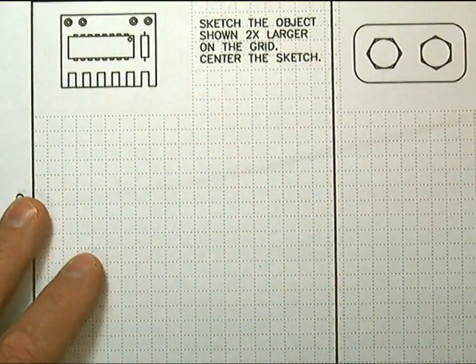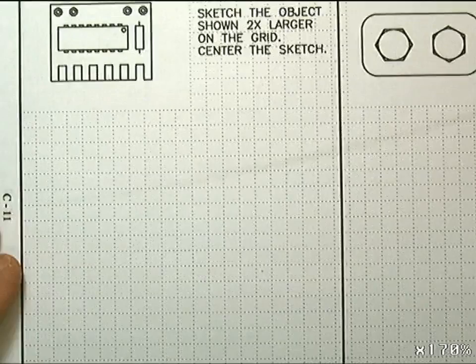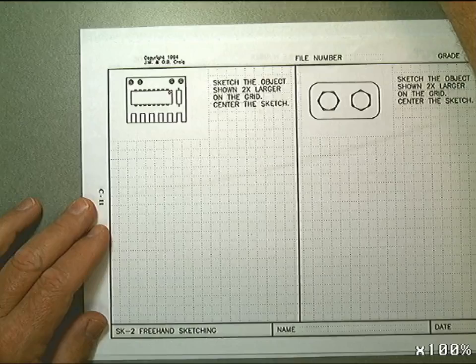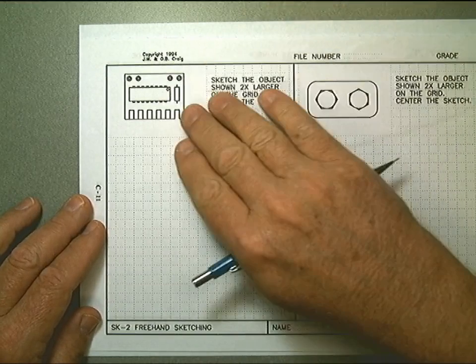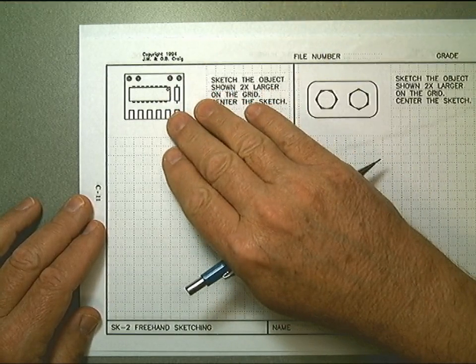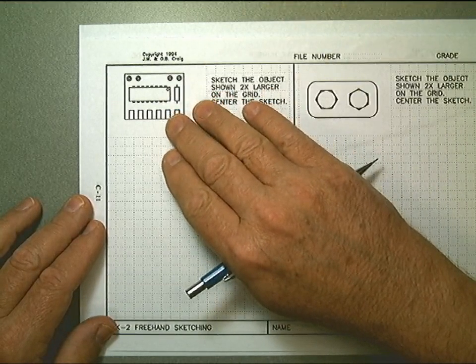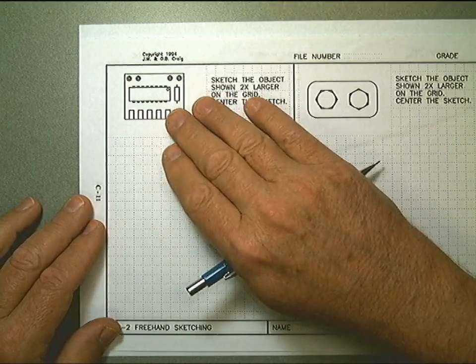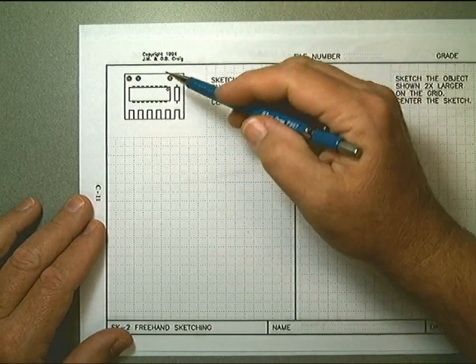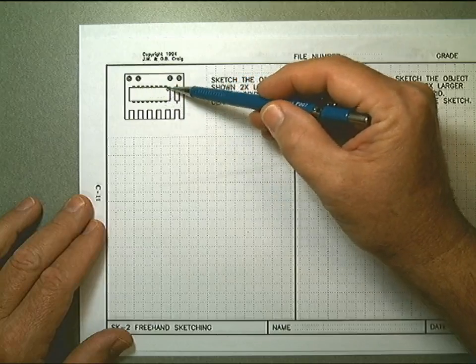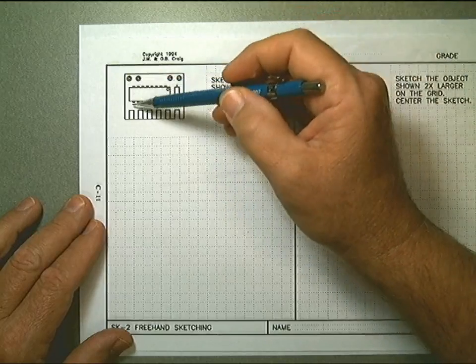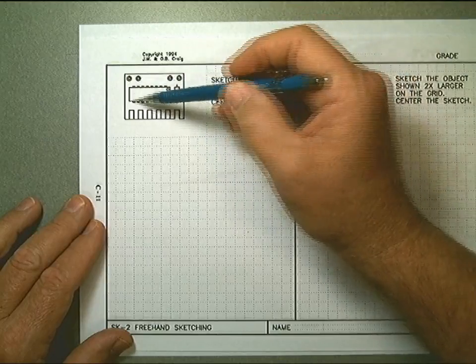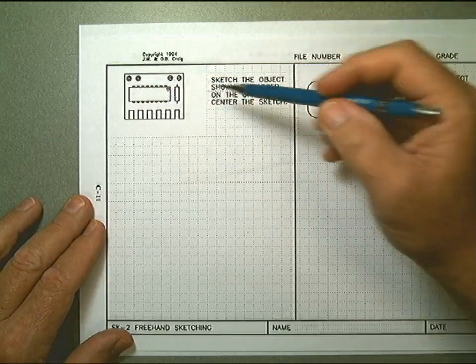All right, we're looking here at the next problem page which is SK-2, and this one is a very busy one. Give yourself plenty of time - lots of detail on here, little tiny circles, little bitty rectangles across here, and that's representing the little contacts that come out of the chip. This is an IC chip.